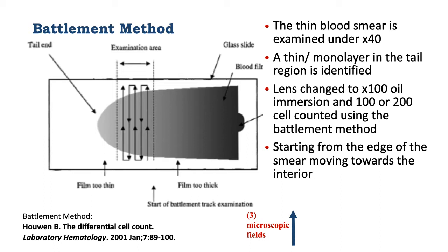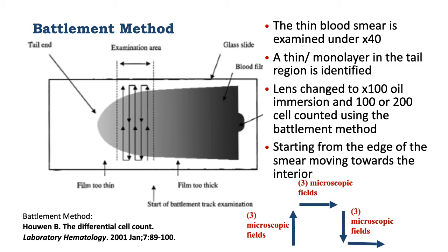So we start from the edge and count three microscopic fields in a vertical direction, then three microscopic fields in a horizontal direction, then three fields in a vertical direction, three in a horizontal direction, three in a vertical direction, and so on.